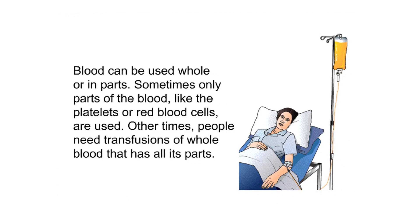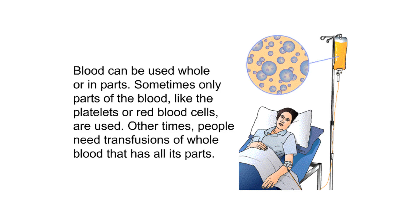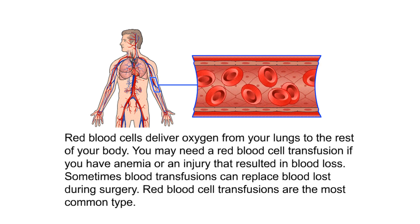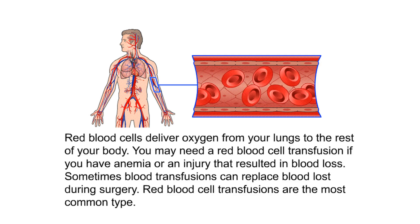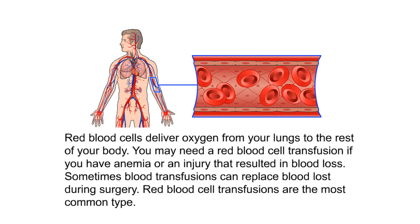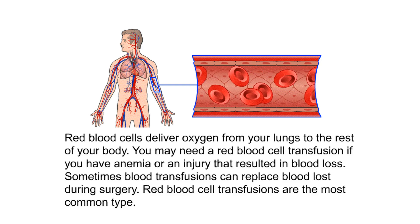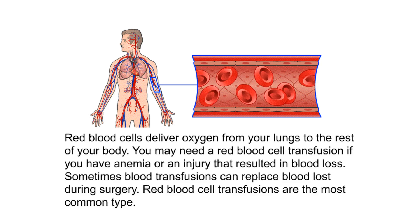Blood can be used whole or in parts. Sometimes only parts of the blood, like the platelets or red blood cells, are used. Other times, people need transfusions of whole blood that has all its parts. Red blood cells deliver oxygen from your lungs to the rest of your body. You may need a red blood cell transfusion if you have anemia or an injury that resulted in blood loss. Sometimes blood transfusions can replace blood loss during surgery. Red blood cell transfusions are the most common type.